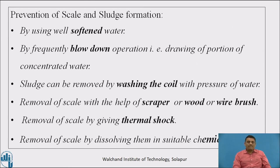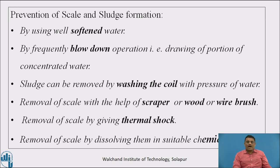Now, how to avoid scale and sludge formation? The first method is by using well-softened water — if softened water is used, there is no possibility of sludge and scale formation. Second, by frequent blow-down operation, drawing off portions of concentrated waste. Sludge can be removed by washing the coil with pressurized water. Scale can be removed with a scrapper, wood or wire brush, by giving thermal shock, or by dissolving the scale in a suitable chemical.